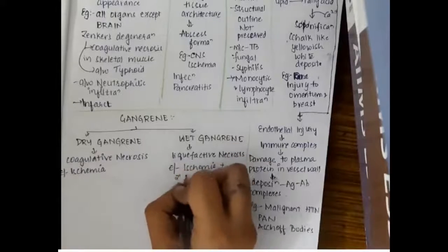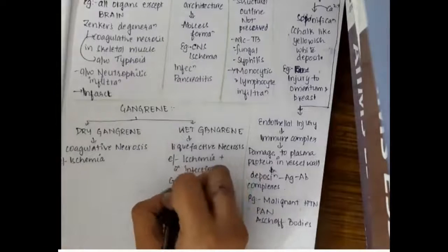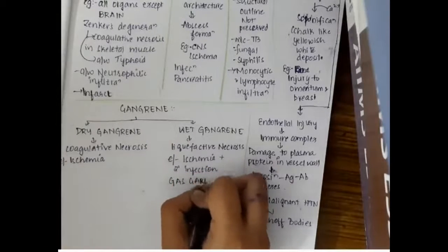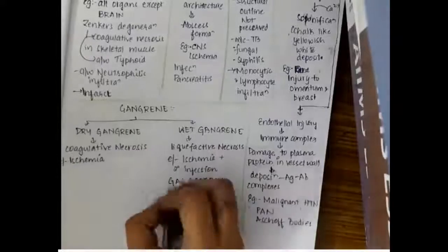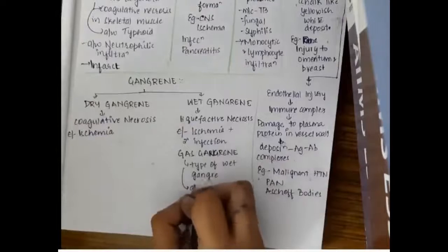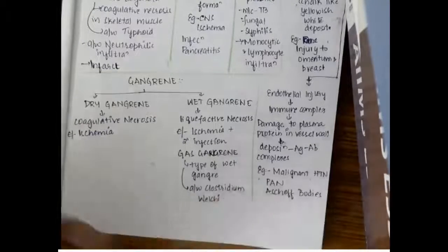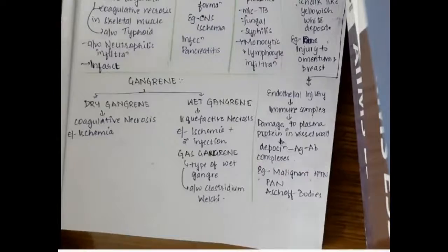Wet gangrene is a liquefactive necrosis occurring due to ischemia and secondary infection. There is also gas gangrene, which is a type of wet gangrene occurring due to Clostridium welchii infection. So this is about the types of necrosis. Thank you for watching my lecture.